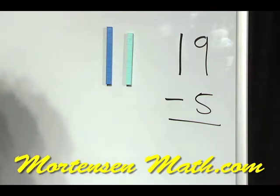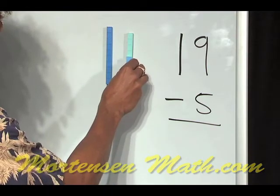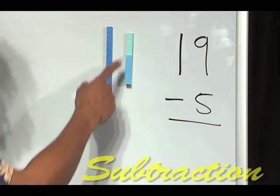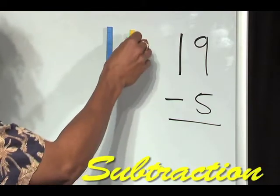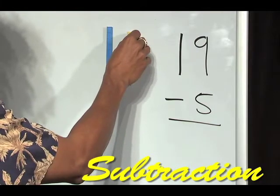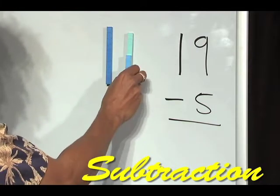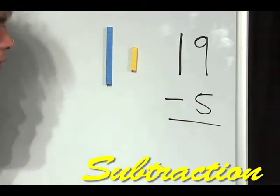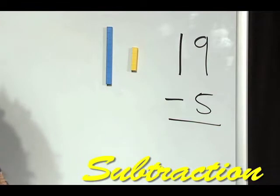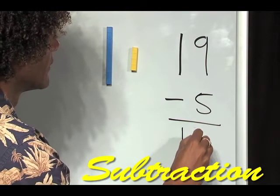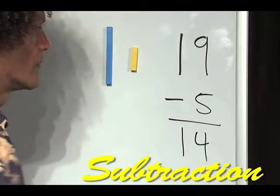There's 5. If I'm going to build a 9 with a 5, you can see what's going to fit there. And 4. So if I take this 5 away from 9, there's 4 left. 14.